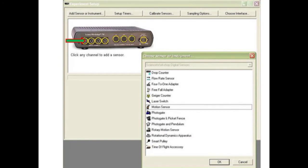Open the Data Studio software and indicate by clicking on the virtual plug at the left that a motion sensor is being used.